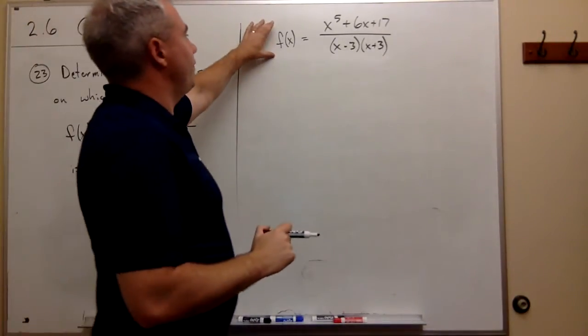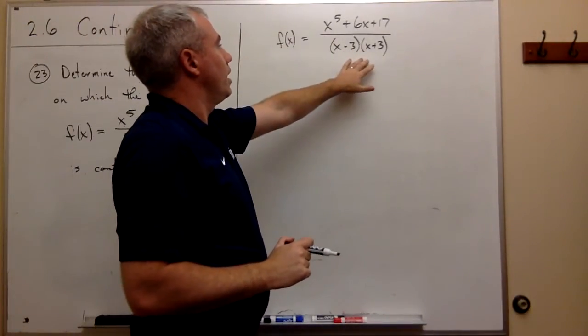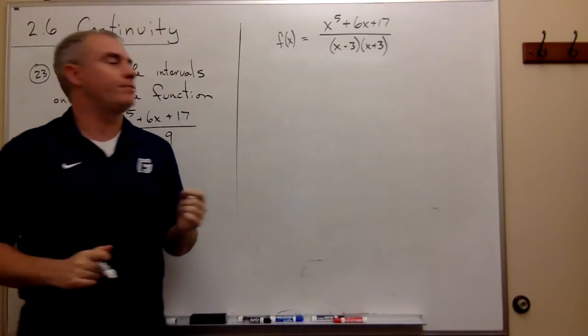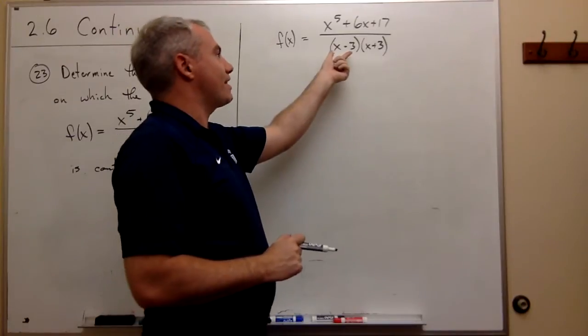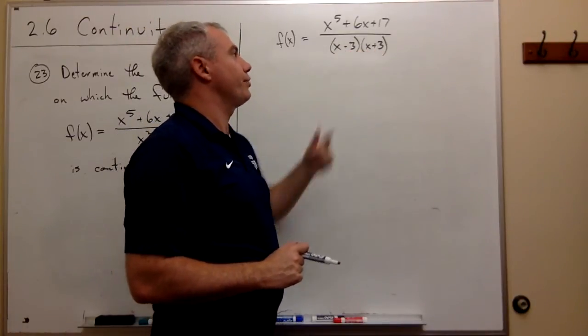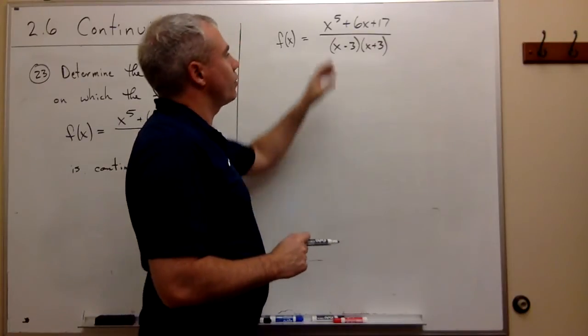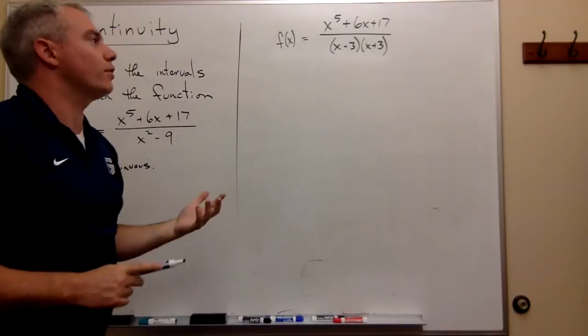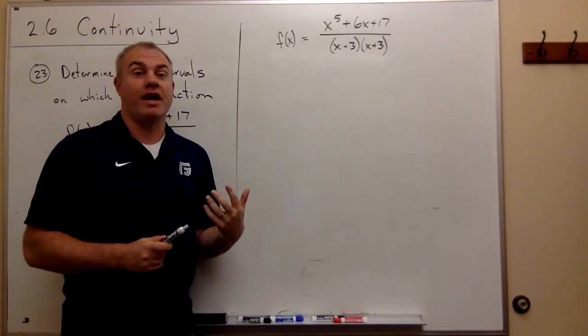Now, we have this function. It's factored down. And so right off the bat, I see some places that could be problems. Because if x is 3, I get division by 0. And if x is negative 3, I get division by 0. And the question is, is that a hole in the graph? Is it an asymptote? What's going on? Is there a problem at those points?